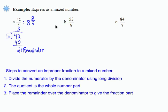We are going to convert 53 over 9 to a mixed number. So I'm going to use long division with 9 dividing into 53. 9 doesn't go into 5, it goes into 53 5 whole times without going over.